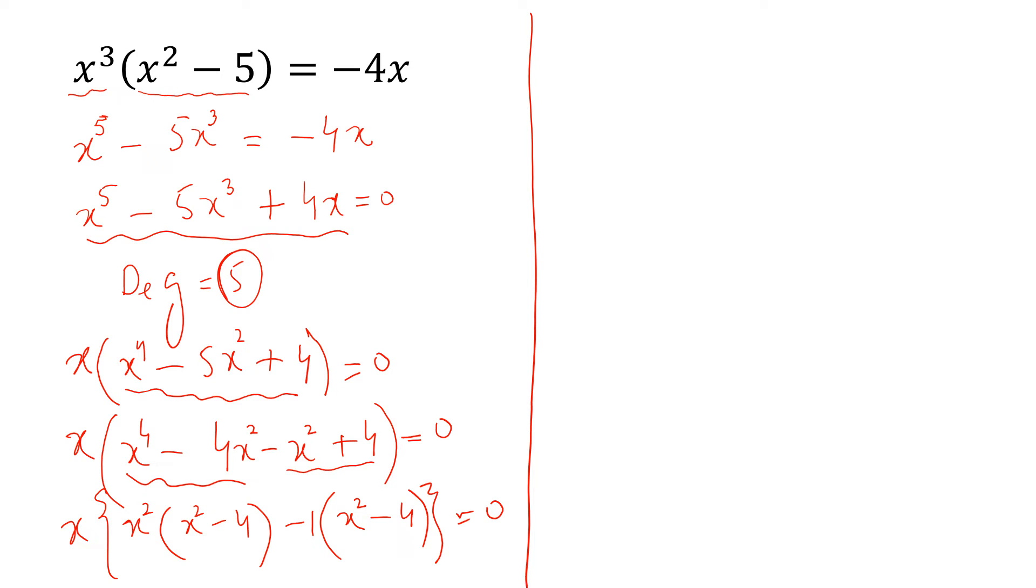Now, we can write this equation in this form x into if we take x square minus 4 common. So, x square minus 4 then x square minus 1 is equal to 0.